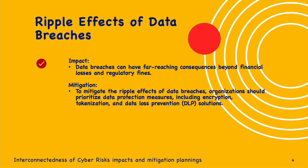Next is the ripple effect of data breaches. Data breaches can have far-reaching consequences beyond financial losses and regulatory fines — they can damage customer trust, erode brand reputation, and lead to legal liabilities affecting customers, employees, partners, and investors. For example, the Equifax 2017 breach compromised personal information of approximately 147 million customers, including names, Social Security numbers, birth dates, addresses, driver's license numbers, and credit card numbers. Equifax faced widespread public backlash, legal actions, and regulatory scrutiny, causing significant loss of trust and reputation damage.